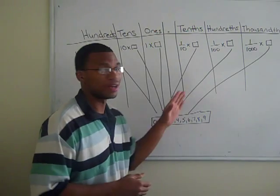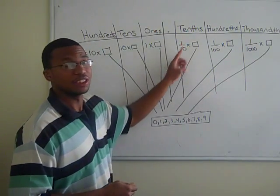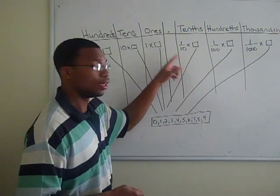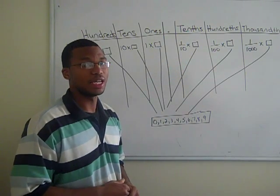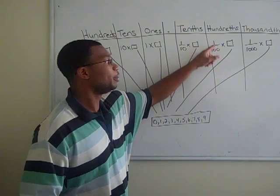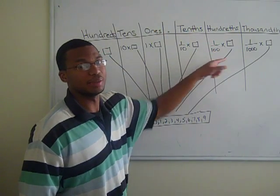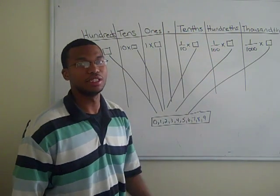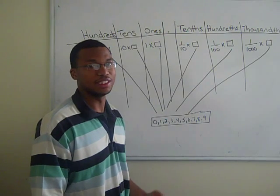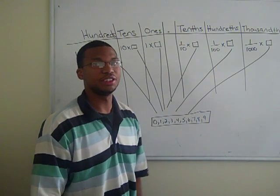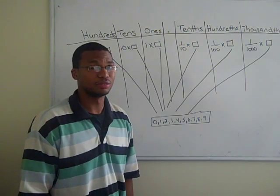On the right side, for the tenths, we have 1 tenth times a digit from 0 through 9. And for the hundredths, it will be 1 over 100 times any digit from 0 to 9. This tells us that as the digits increase going in the right direction, they will become substantially smaller.